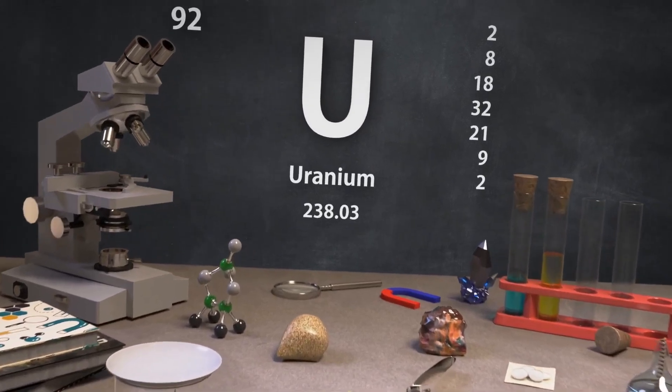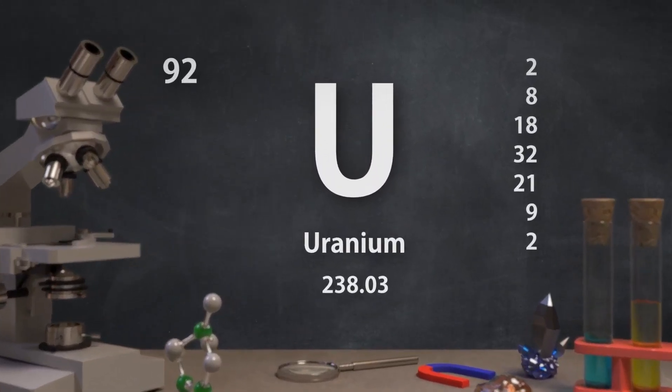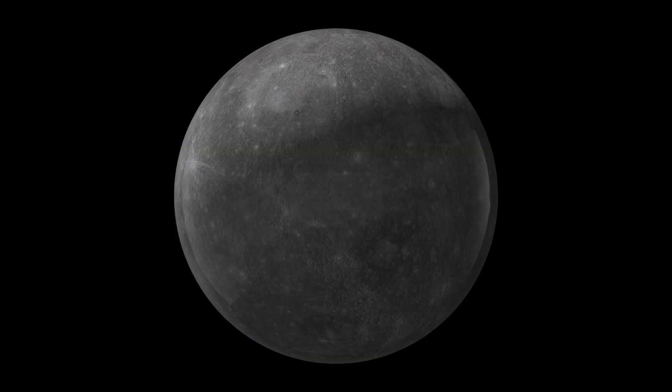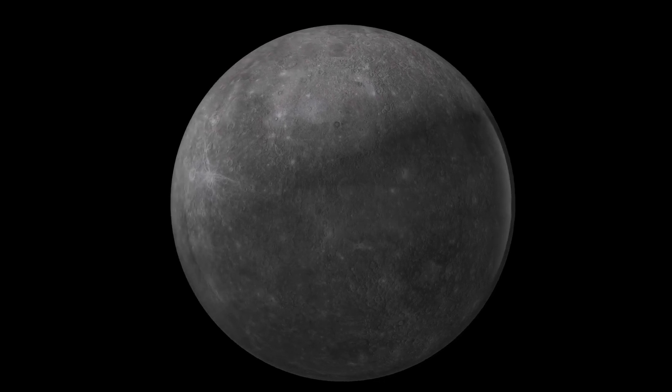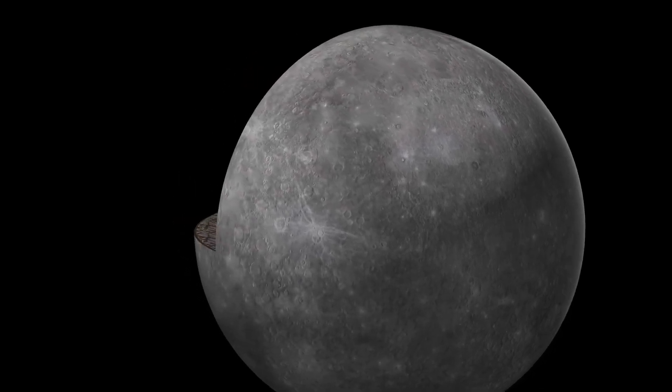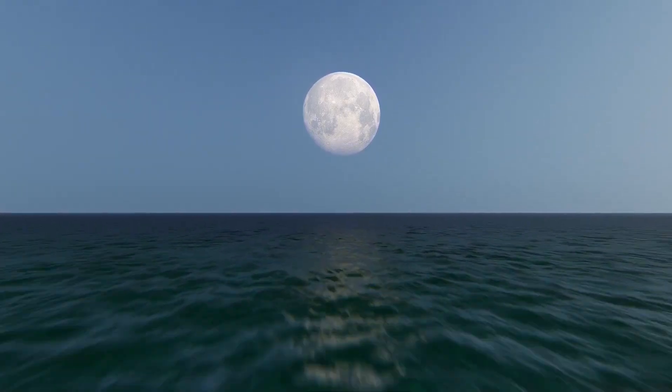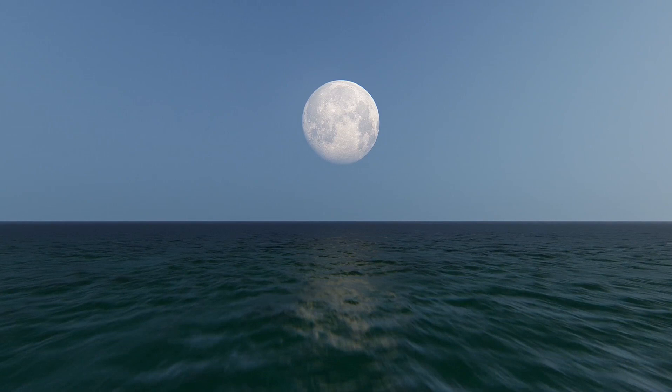This updated analysis has also changed our understanding of Uranus's moons. Scientists once thought that the lack of plasma meant the moons were geologically inactive. However, it is now believed that the five largest moons may be geologically active and could even host subsurface oceans or other dynamic features.